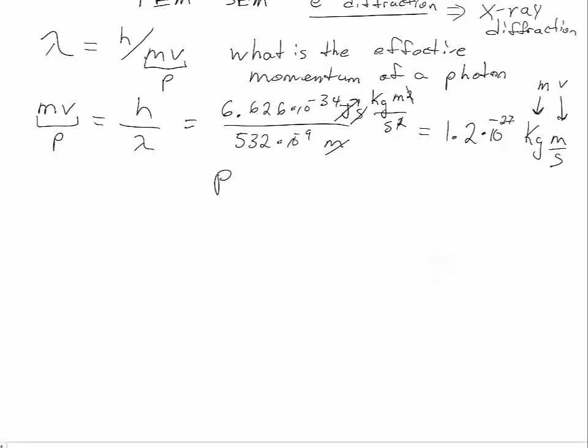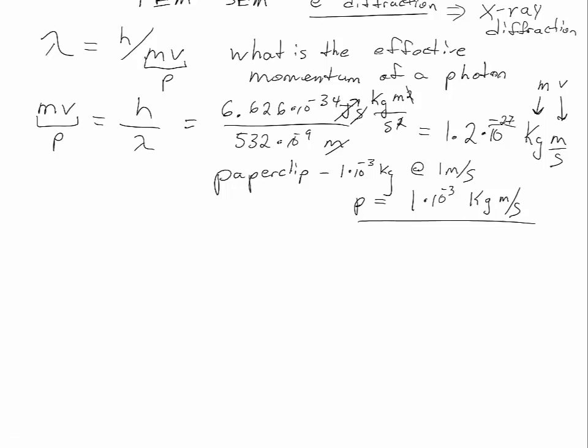And just for comparison's sake, a paper clip, which is a mass somewhere around a gram or 10 to the negative third kilograms, if that's moving at one meter per second, then that has a momentum of 1 times 10 to the negative third kilogram meters per second. So a paper clip has 10 to the 24th times more momentum, like a mole's worth of momentum more than that one single photon.